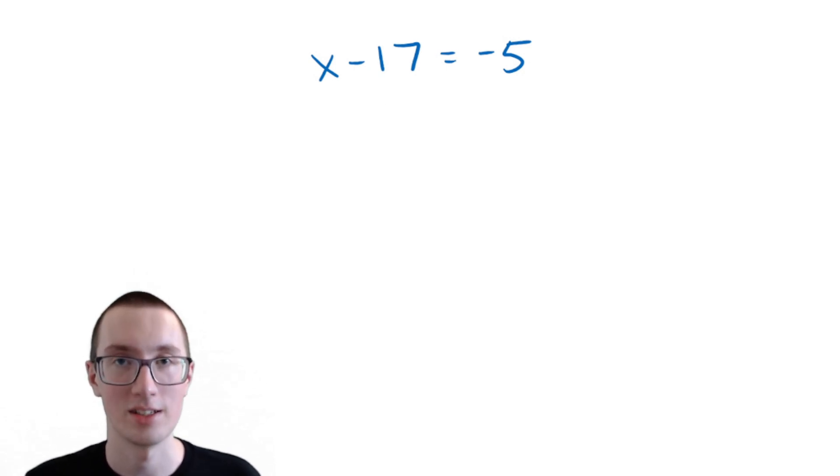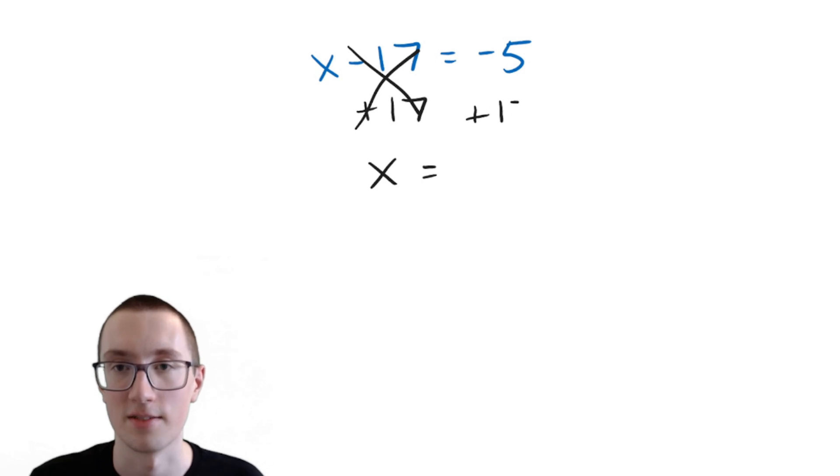And we'll do the opposite of minus, which is plus. So we're going to add 17, these cancel, and you're left with just x. Well, that's great and all, but on the other side, we have to do the same thing. We need to add 17. And now we have negative 5 plus 17, which if you might be kind of confused on how negative numbers work, but in reality, it's just subtraction. So if you want, you can think of this as 17 minus 5. You're taking away 5 and then adding 17, which in that case is 12.